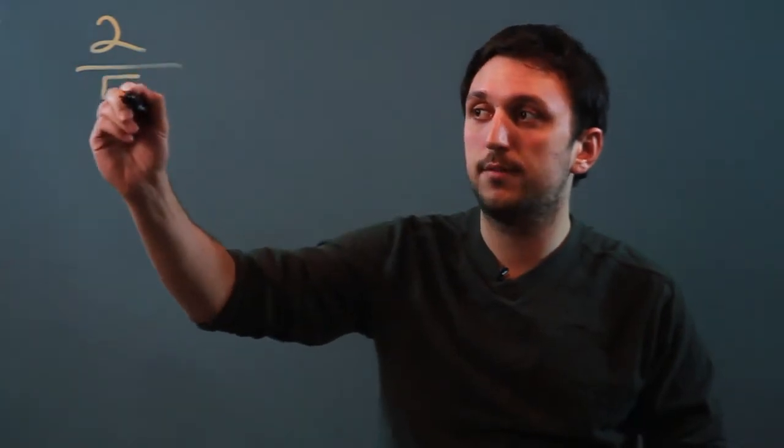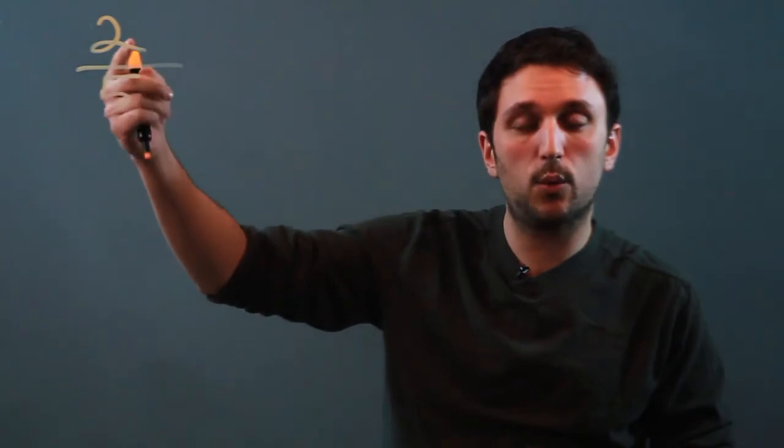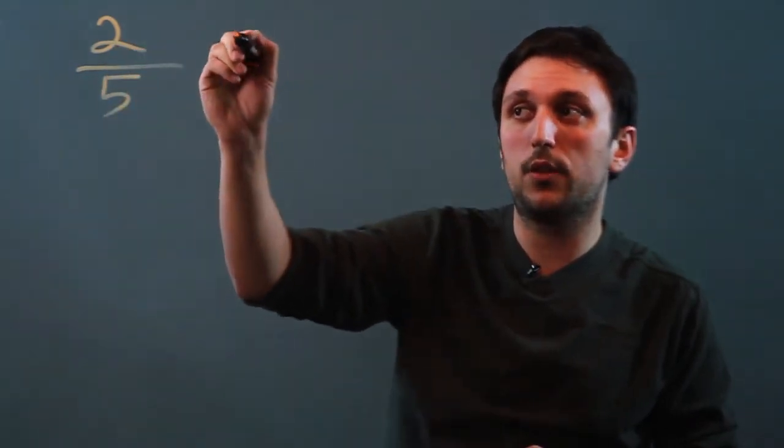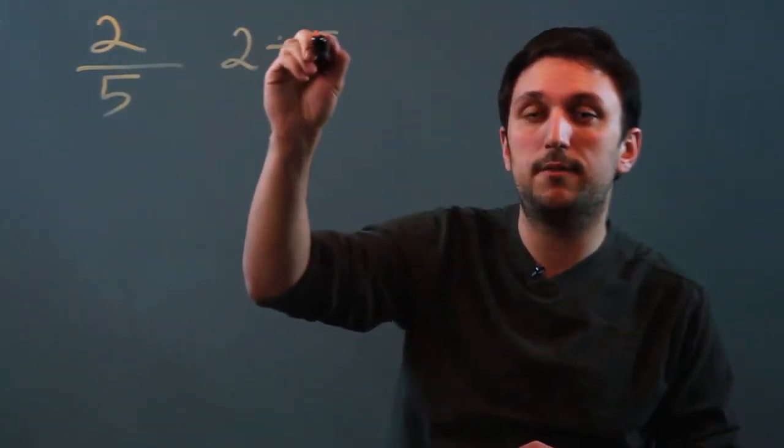So first, let's pick a small number and a big number. Let's say 2 over 5. Now, if we're dividing, that's 2 over 5, or we could call it 2 fifths. Another way to write it would be 2 divided by 5.